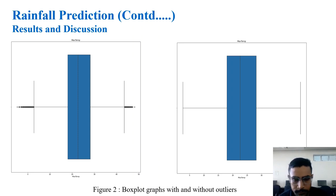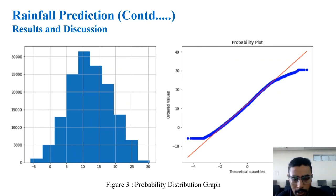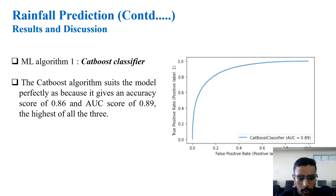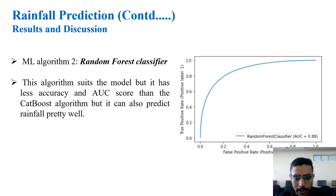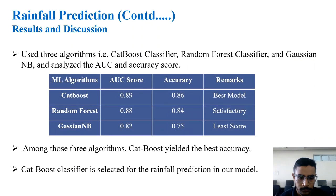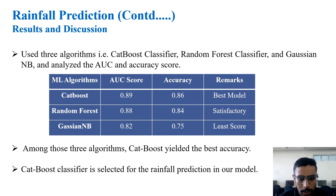For the CatBoost classifier, we plotted the false positive rate versus true positive rate curve and found the AUC score to be 0.89. For the Random Forest classifier, the AUC score was 0.88. For the Gaussian Naive Bayes classifier, the AUC score was 0.82. Comparing all three models, CatBoost was the best model and was selected for our algorithm.